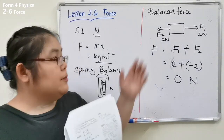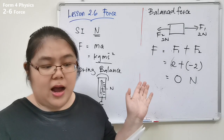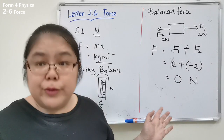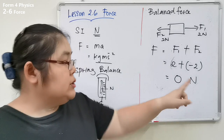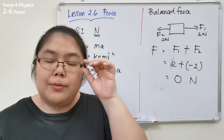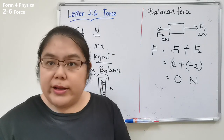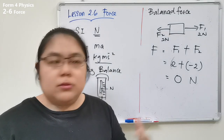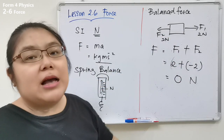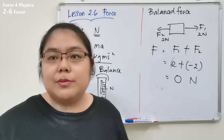When the forces cancel each other, the net force becomes zero. 'Net force' means after calculation, the final value is zero — like a 'net price' meaning no more discounts. So when we say net force equals zero, that is a balanced force.